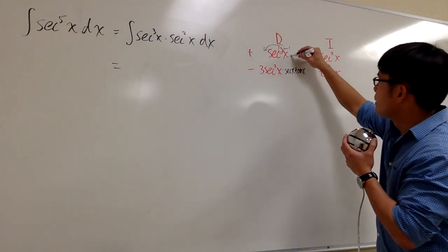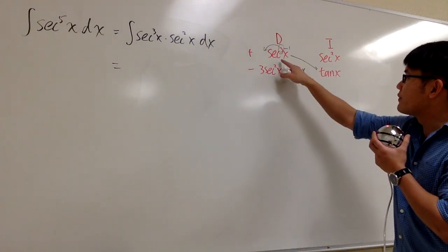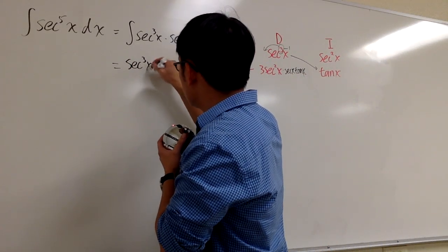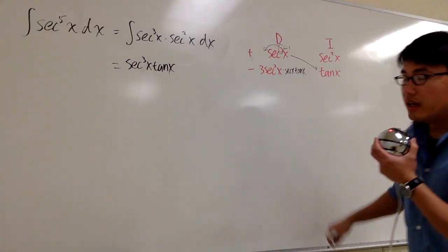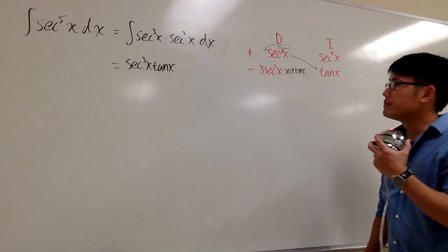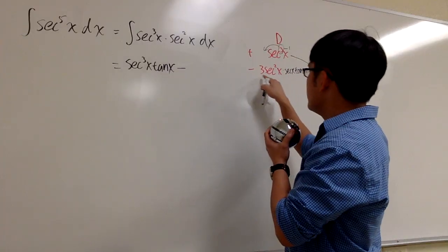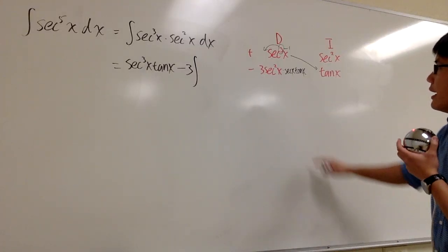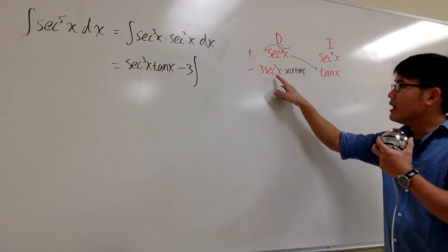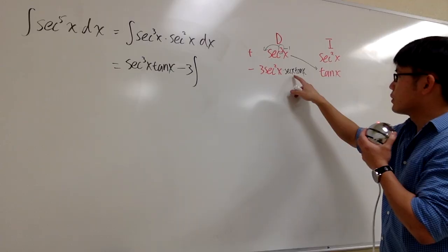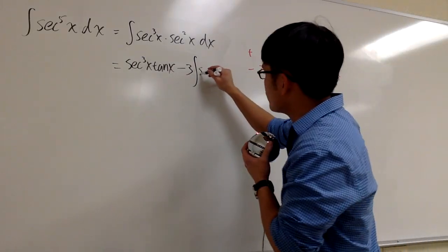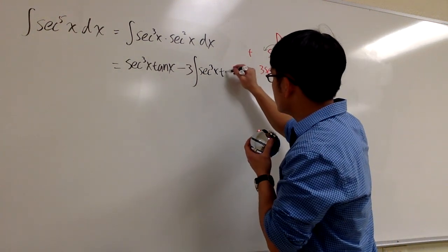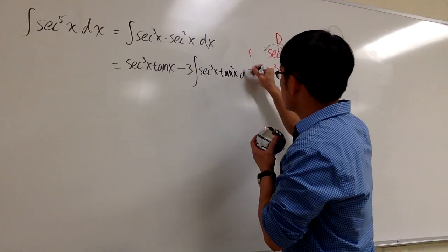To produce the answer, we look at the product of the diagonal, which gives us secant to the third power x times tangent x. The product of each row remains as an integral, so we have minus 3 out front — numbers can go outside the integral sign. Inside we have secant squared x times secant x, which is secant to the third power, multiplied by tangent times tangent, giving us secant to the third power x times tangent squared x dx.